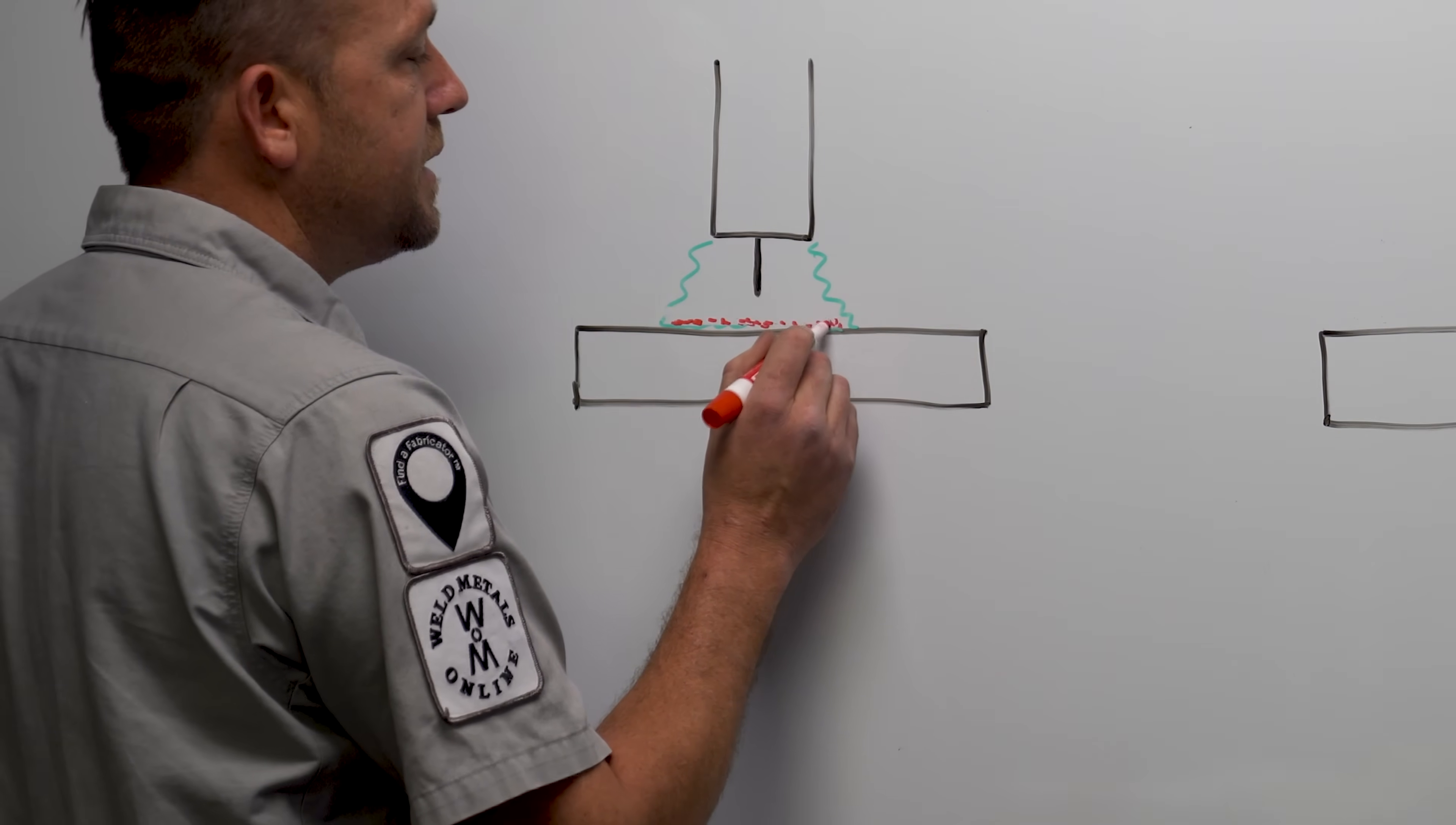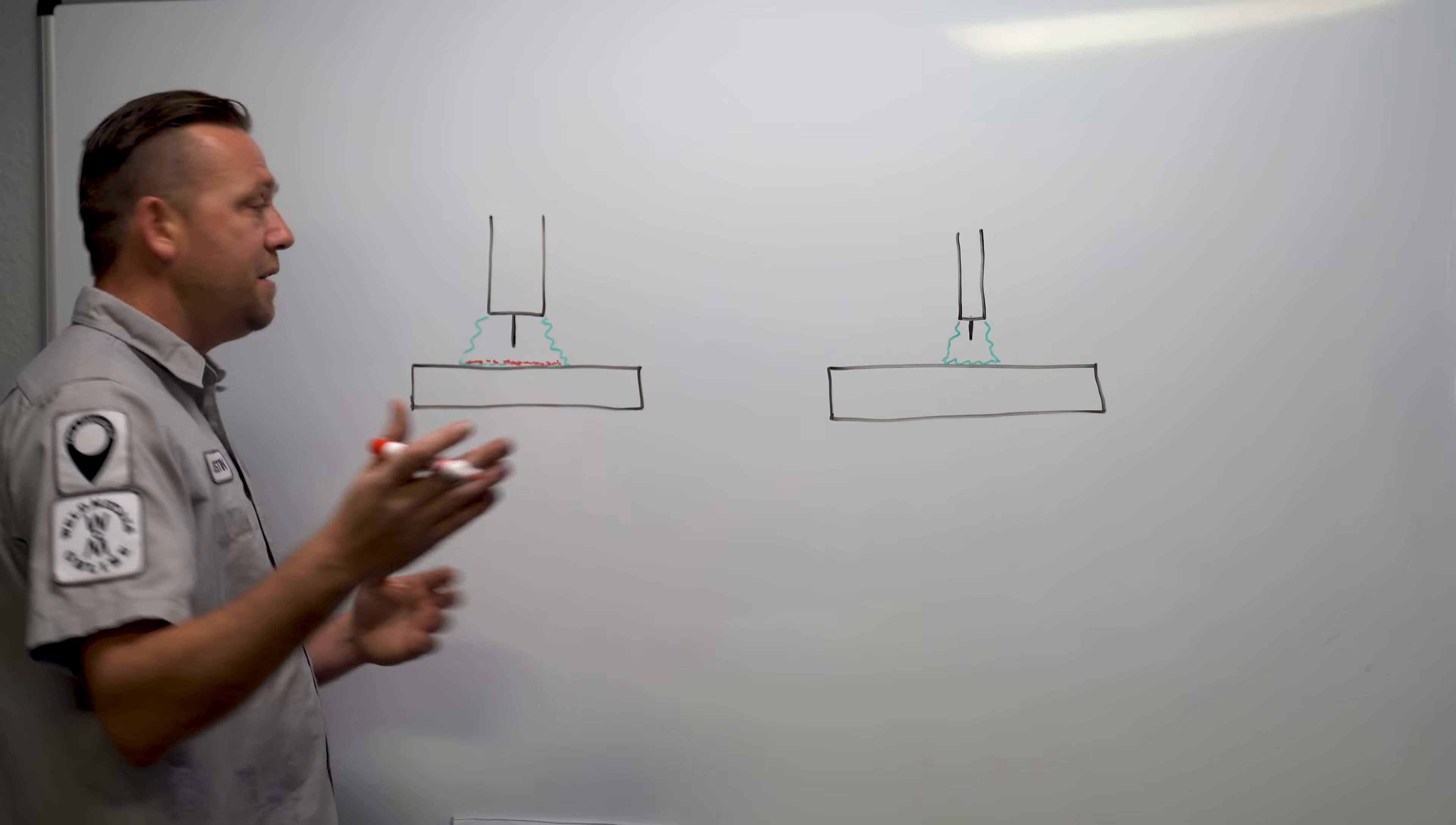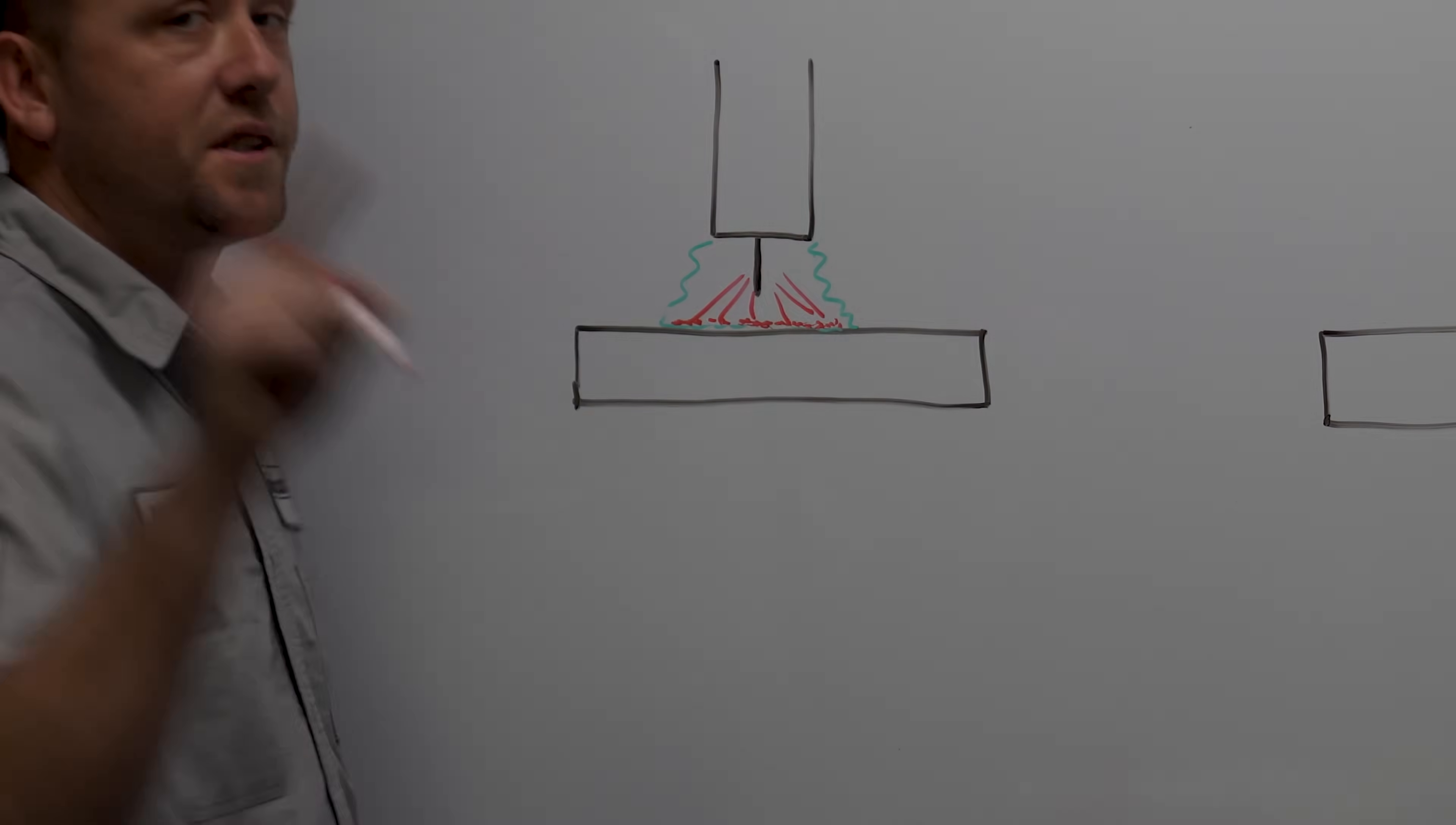Anywhere the argon touches is an area where the arc can strike. On the positive stroke, or the cleaning cycle of the AC wave, the entire surface here is electrified and is trying to blast its way up into a single point, which is the tungsten.